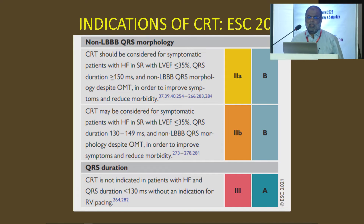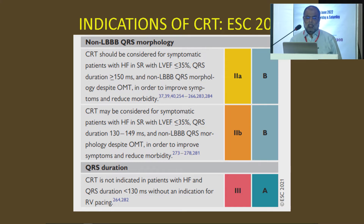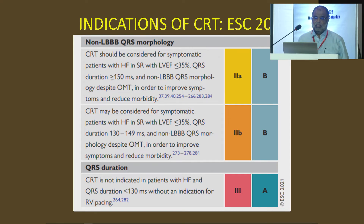Non-LBBB morphology with QRS more than 150 milliseconds is a Class 2 indication. If QRS duration is 130 to 149 milliseconds, this is also a Class 2 indication. If QRS duration is less than 130 milliseconds, CRT is contraindicated.